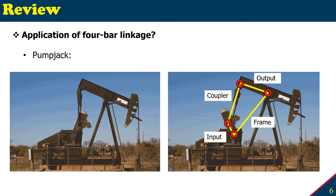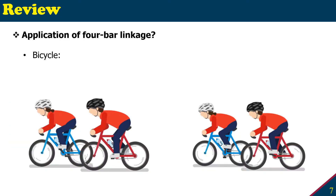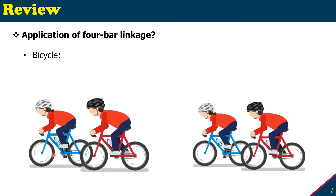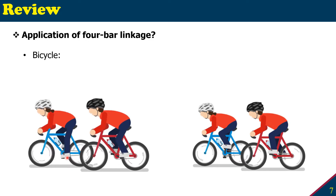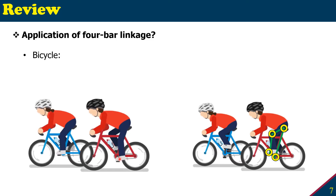Another example is a bicycle. The bicycle needs power applied to the pedal for continuous motion. We can model the pedal and human leg as a four-bar linkage. Looking at one side, from the center point of rotation to the pedal is one input arm.